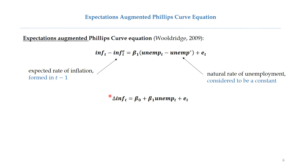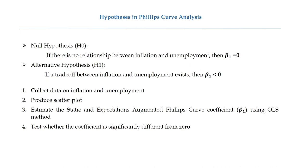With all this in mind, and after rearrangement, the equation is as follows. On the left-hand side is the first difference of inflation, while the right-hand side remains unchanged, as in the static Philips Curve model.